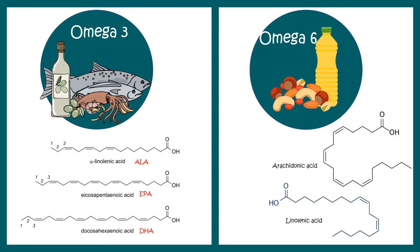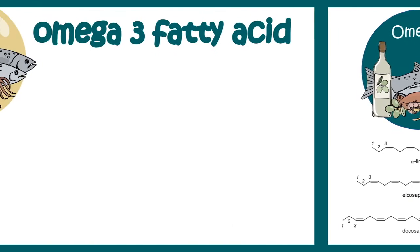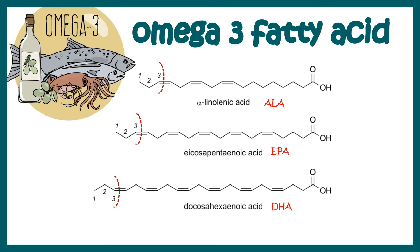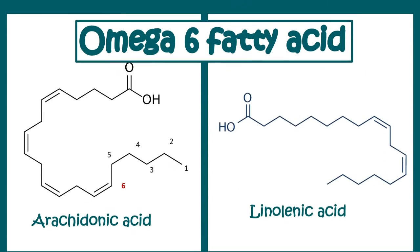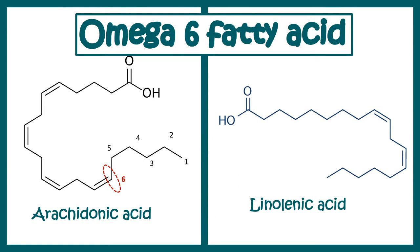Omega-3 fatty acids such as linolenic acid, eicosapentaenoic acid, and docosahexaenoic acid all share a common structural feature: unsaturation at the third carbon, or omega-3 position. Whereas omega-6 fatty acids have unsaturation at the sixth carbon. There would be multiple double bonds in the structure, which is why these are called polyunsaturated fatty acids, and omega-6 is one class of polyunsaturated fatty acid.